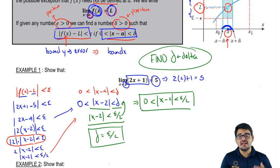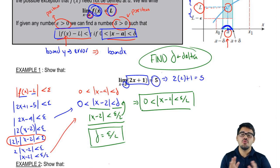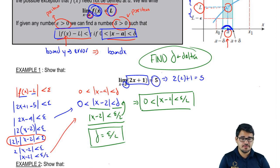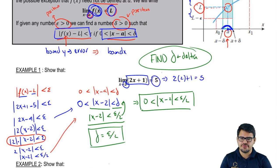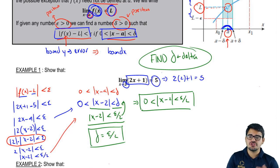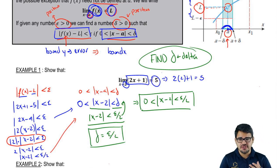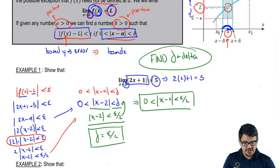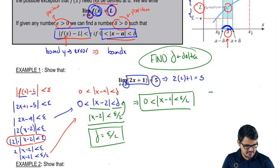The idea is that we find a delta that works to bound — that's all we care about, just finding delta. We do it by manipulating the left side to make it fit into the delta equation. We know we're going to bound the error with epsilon, and then find a delta in terms of epsilon that works. In this case, when we plugged in 2, the limit was defined. So this is an example of a being defined.